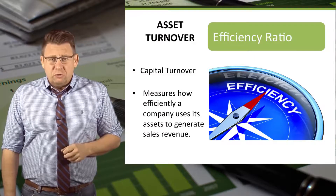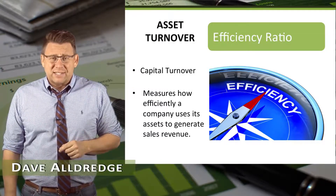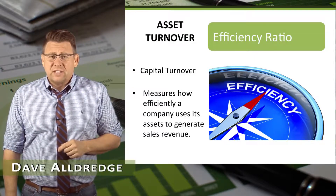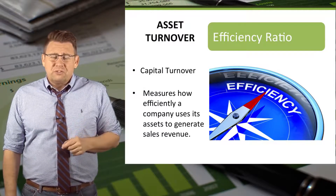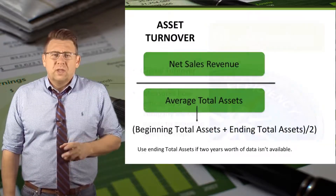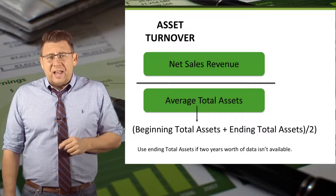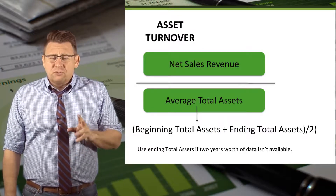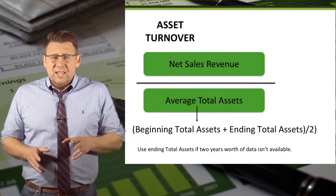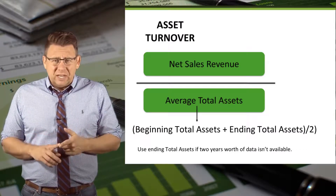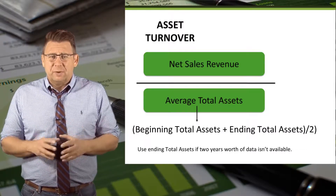The Asset Turnover Ratio measures how efficiently a company uses its assets to generate sales revenue. Asset turnover is a measure of efficiency. The formula is net sales revenue divided by average total assets. Average total assets is calculated by taking the beginning total assets plus the ending total assets and dividing by 2.